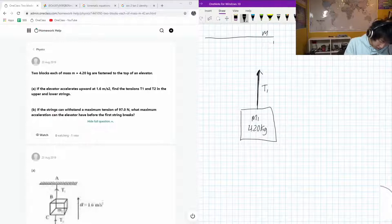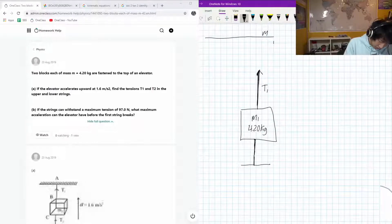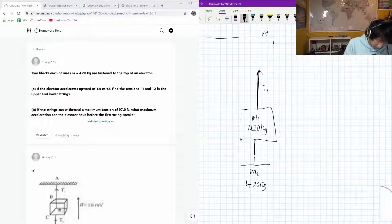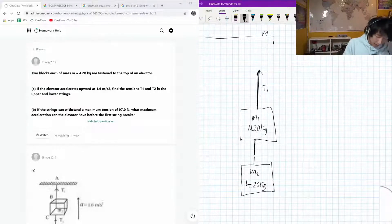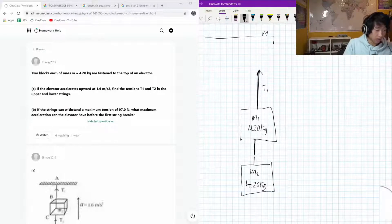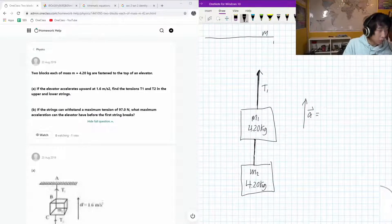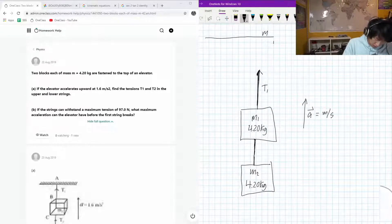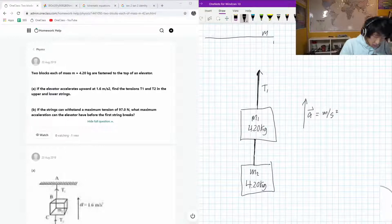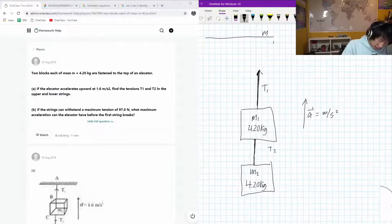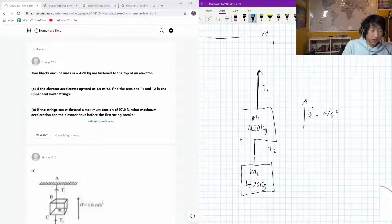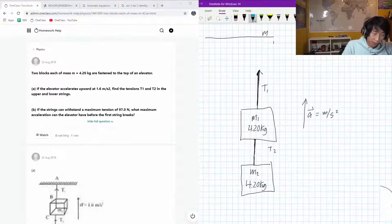This is tension one. And in here, secured directly below that M2, we have another 4.20 kilograms. And yeah, that's the situation. The total acceleration upwards is 1.6 meters per second squared. And this will be tension two. Okay, so let's actually draw the forces in this, and kind of make like a free body diagram of what's going on here.